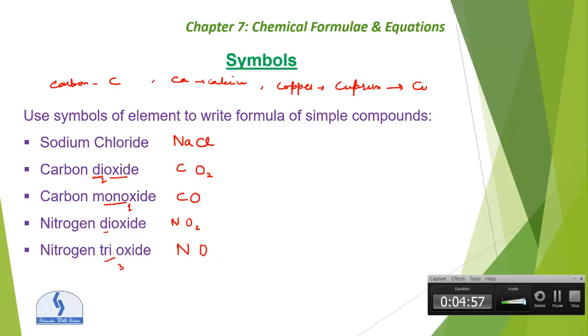Tri means 3, so it means NO3, right? Now if it is magnesium oxide, what will be the formula? Any guesses? Yes, Mg for magnesium and O for oxygen. There is no di, there is no tri, there is no mono. It is simple oxide, so we are doing O.